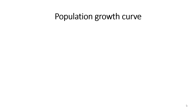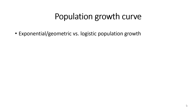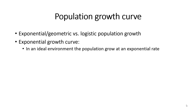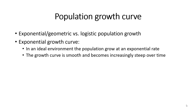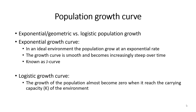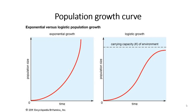Now let's look into the population growth curve. A population can grow from generation to generation if food is abundant and environmental conditions are favorable. This is measured by intrinsic growth rate, represented as lowercase r, meaning how fast the increase in population occurs. The growth rate is either exponential or logistic. In an ideal environment, the population grows at an exponential rate. The growth curve is smooth and becomes increasingly steep over time, known as a J curve.